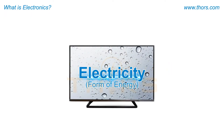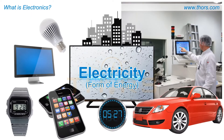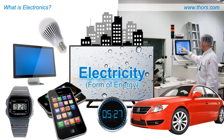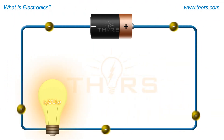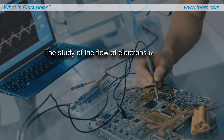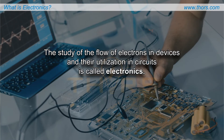Electricity, which is a form of energy, powers most of the modern devices we use today. Typically, electricity, or the flow of electrons, runs through a closed loop known as a circuit. The study of the flow of electrons in devices and their utilization in circuits is called electronics.